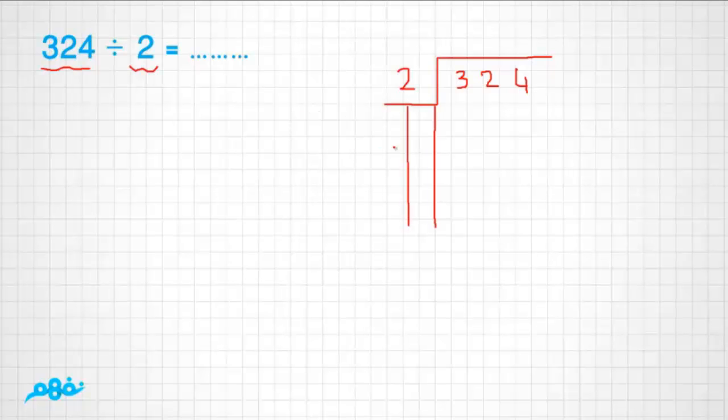That means in the times table of two, one times two is two, and two times two is four. Four is greater than three, and two is smaller than three.